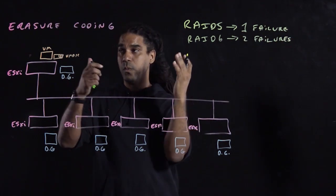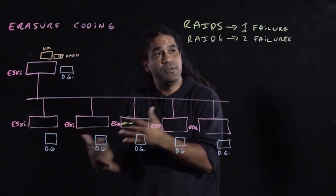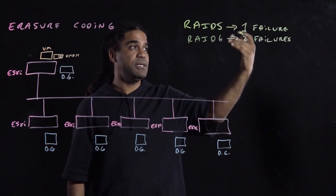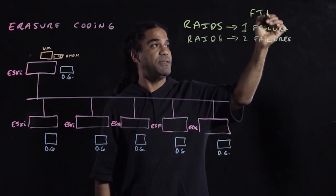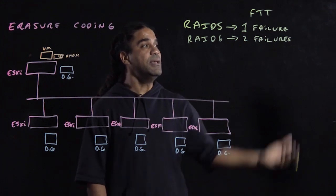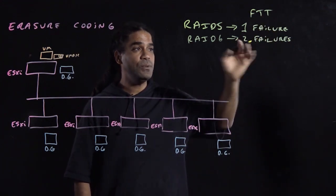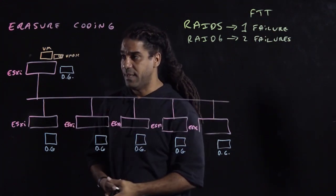When you want to configure an SPVM so that you can leverage Erasure Coding, RAID 5 or 6, if you select an FTT of 1, then you have a RAID 5 option for the method. If you select an FTT of 2, then you have a RAID 6 option for the method.